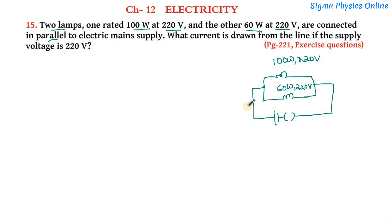They are connected in parallel to the electric mains supply whose supply voltage is 220 volt. So the supply voltage here is 220 volt. Now these two bulbs are connected in parallel. Now we have to find out what is the current drawn from the line, that is what is the current flowing through this circuit when these two bulbs are operational.